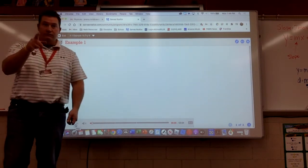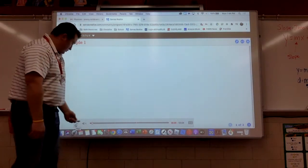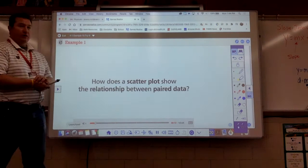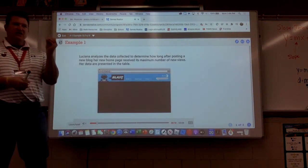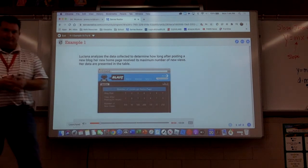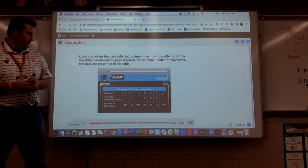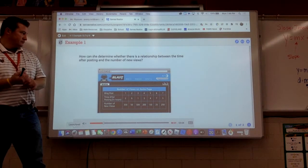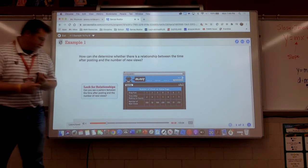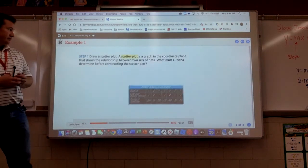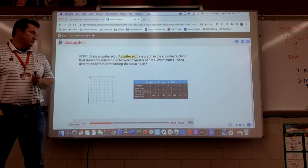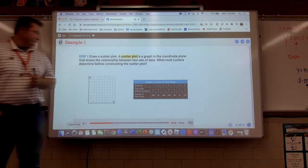Well, we are on page 212. How does a scatter plot show the relationship between paired data? Another new word. Think about this question during the lesson. We will. Luciana analyzes the data collected to figure out how long after posting a blog, her new homepage received its maximum number of new views. Her data are presented in the table. How can she determine whether there is a relationship between the time after posting and the number of new views?